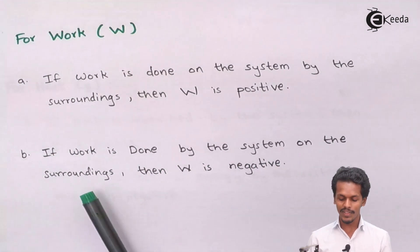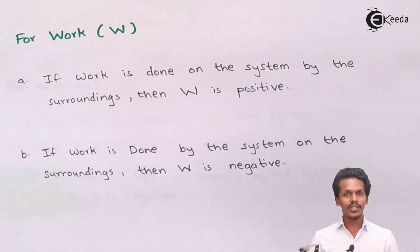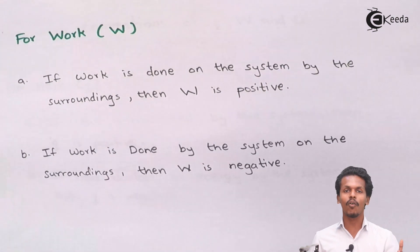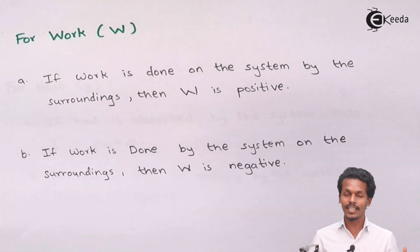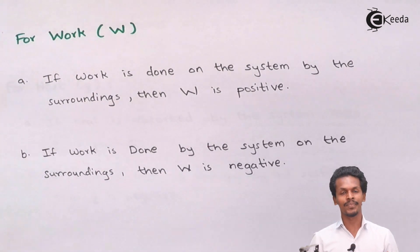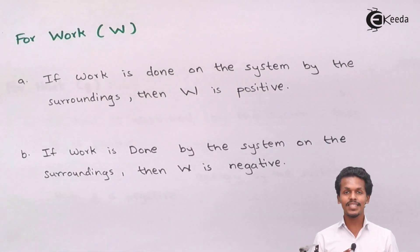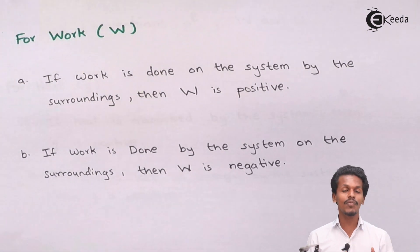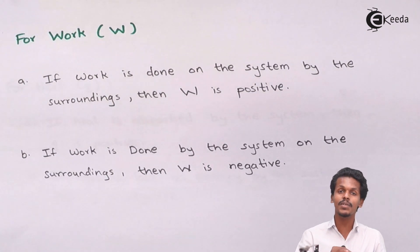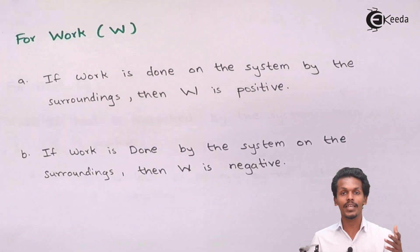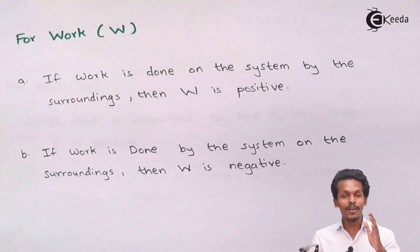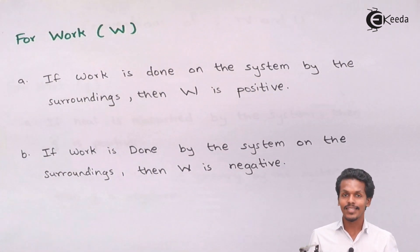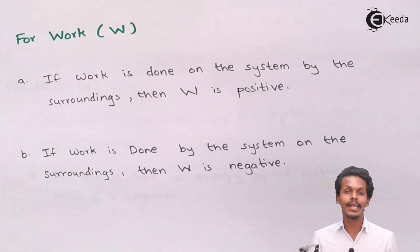If work is done by the system on the surrounding, then W is negative. In this case, the gas expands and the final volume is greater than the initial volume. The system is doing work on the surrounding against the opposing force applied on the piston. Whenever we see work denoted with a negative sign, it clearly indicates that in that process the system has been acting on the surrounding.